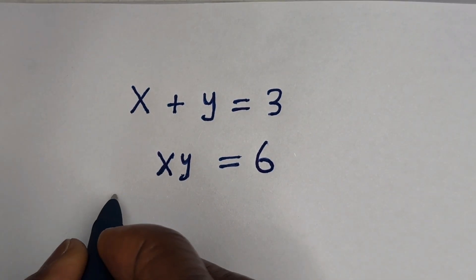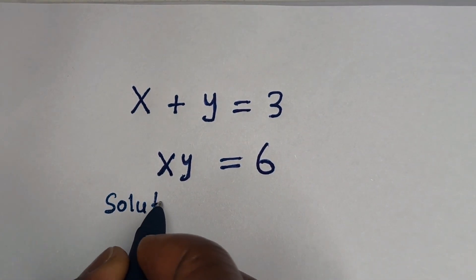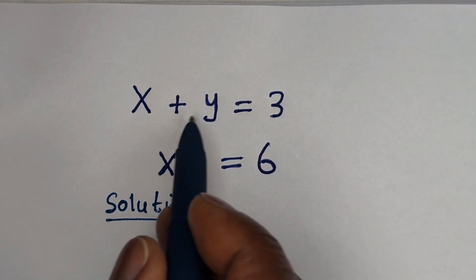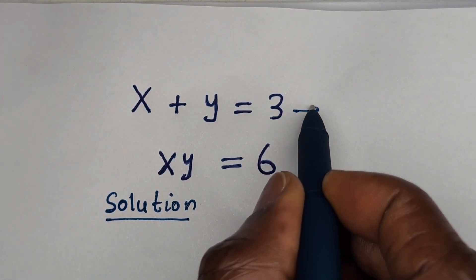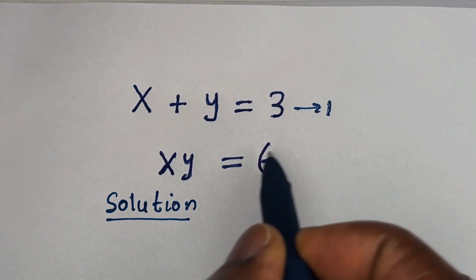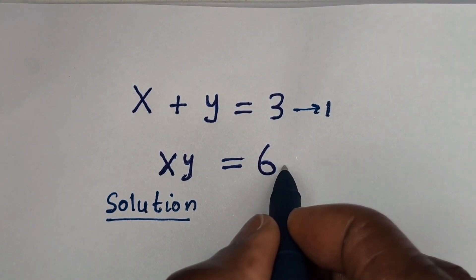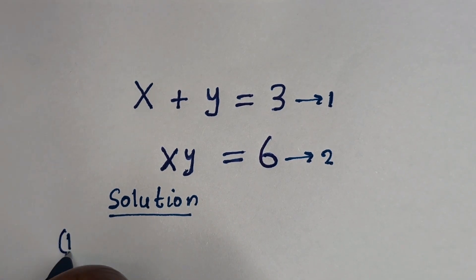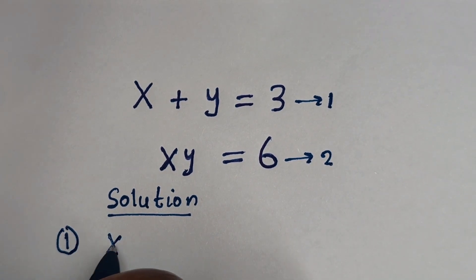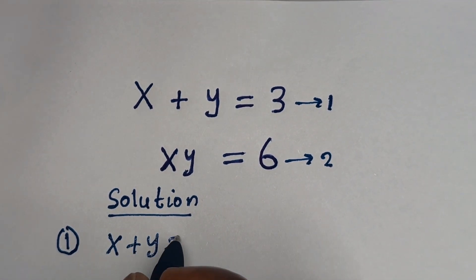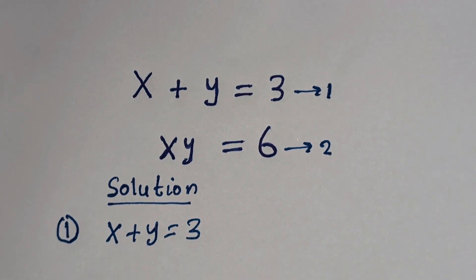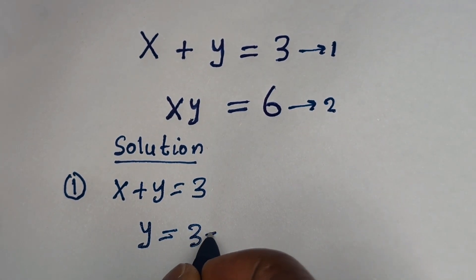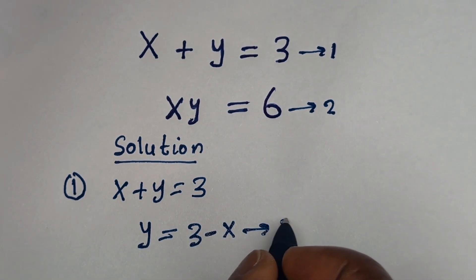Solution. S plus Y is equal to 3 — let us call this equation 1. SY is equal to 6 — let us call this equation 2. Then from equation 1, S plus Y is equal to 3, so Y is equal to 3 minus S. Let us call this equation 3.